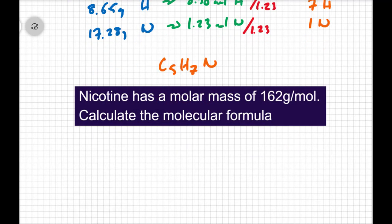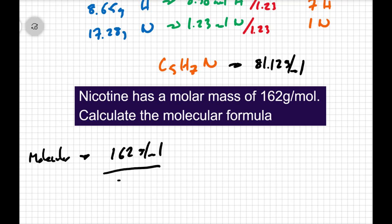We're given that nicotine has a molar mass of 162 grams per mole. That is the molecular mass. C5H7N, that empirical mass, has a mass of 81.12 grams per mole, if you add up the pieces on the periodic table. So if I take the molecular mass and divide it by the empirical mass, well then that will tell me the ratio of how many times the empirical unit goes into the molecular unit.